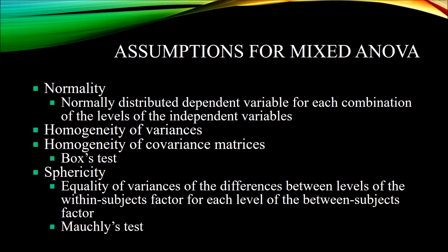To test for normality, we usually use a few different methods and combine the results. One test you could use is the Shapiro-Wilk, typically evaluated at an alpha of 0.05. If the p-value is less than 0.05, that leads you to believe the data are not normally distributed; if it's greater than 0.05, that indicates the data are normally distributed. You also want to look at the skewness and kurtosis for each distribution, as well as the histogram for each distribution.